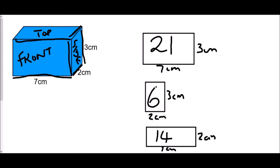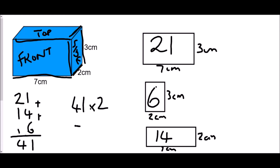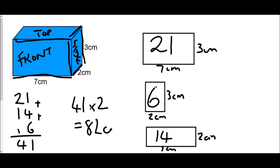A slightly different method here: instead of doubling each face individually, we can add the three faces together first and then multiply by 2, which gives the same result. So 21 + 14 + 6 = 41, and 41 × 2 = 82 cm².